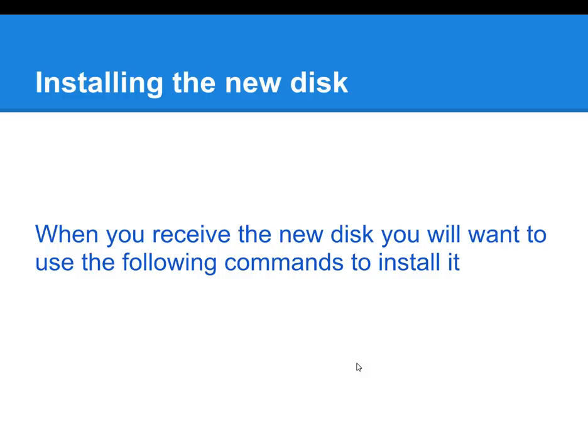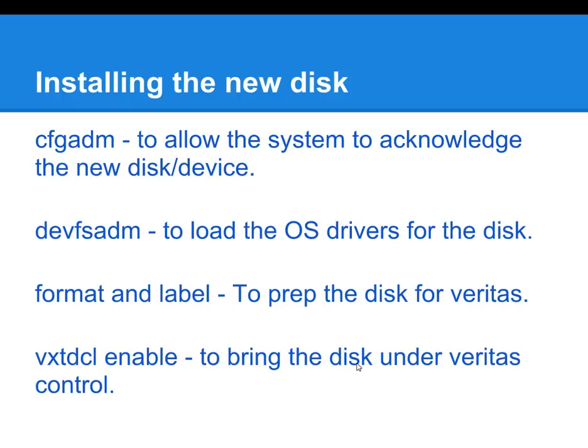You're basically waiting to get a new disk either shipped to you by the vendor or you've gone out and gotten a new disk. In that case, you are going to perform the following actions again — we already spoke about these at the beginning of this tutorial: cfgadm, devsadm, format and label, and VxDCTL enable.